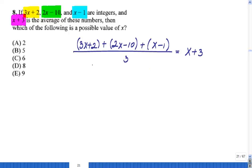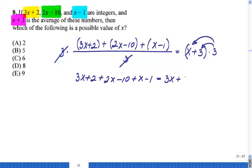And what we have now, we have an equation in one variable. Let's solve it. I don't like denominators, so one way to eliminate this denominator will be to multiply both sides by 3. 3 and 3 will cancel on the left. You can basically remove the parentheses. So I have 3x plus 2 plus 2x minus 10 plus x minus 1 equals... Here, you should multiply that 3 to everything inside the parentheses. Equals what? 3 times x, 3x plus 3 times 3, 9.